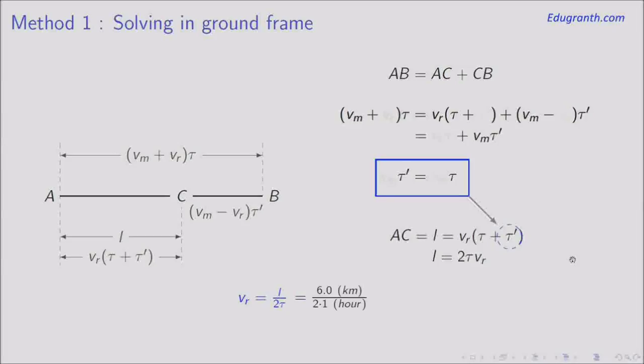Substituting the numerical values — L equals 6 km, tau equals 1 hour — we get the flow velocity as 3 km per hour. This is the answer.